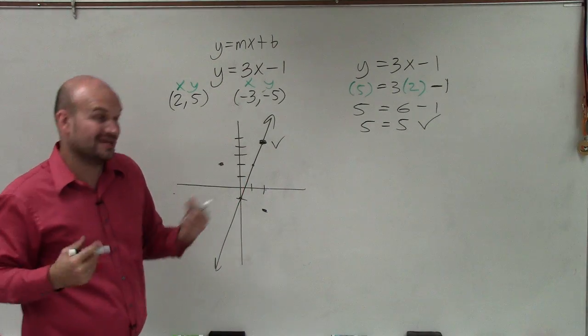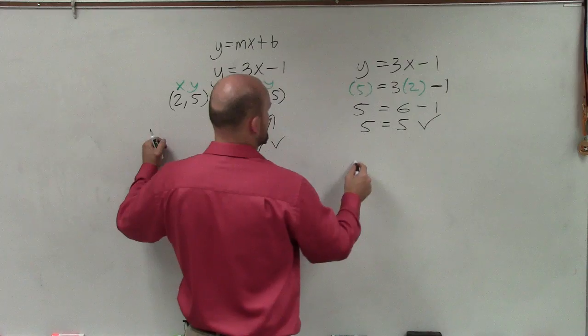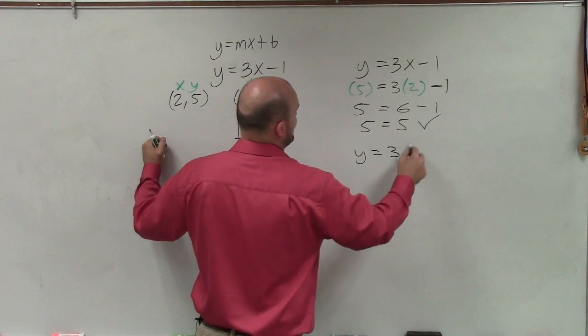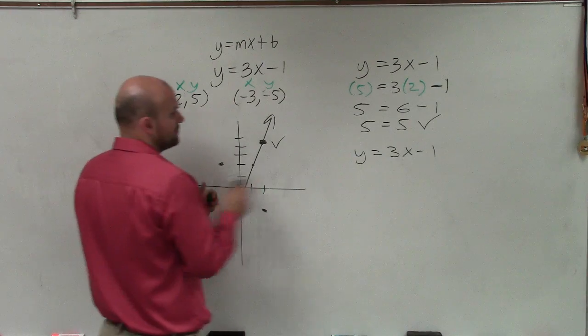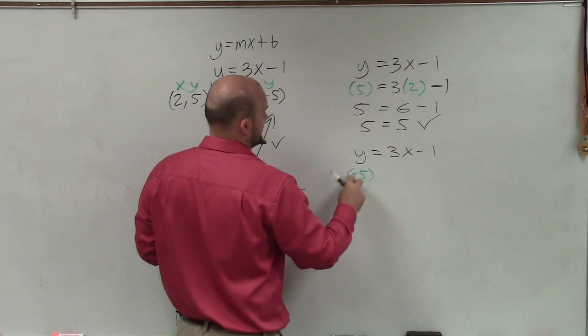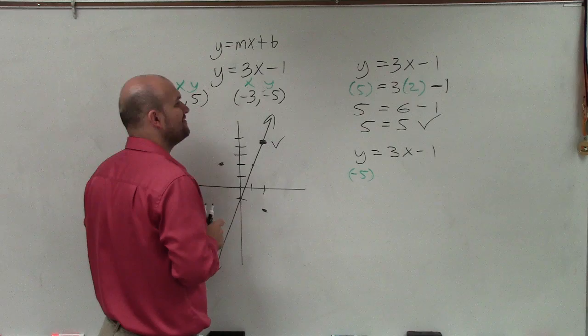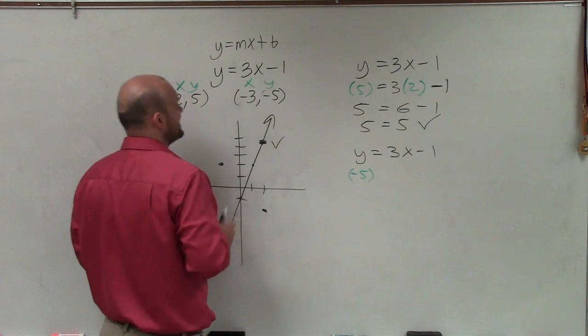Now let's check the point negative 3, negative 5. So I have y equals 3x minus 1. Now I'm going to plug in negative 5 for y, and negative 3 in for x.